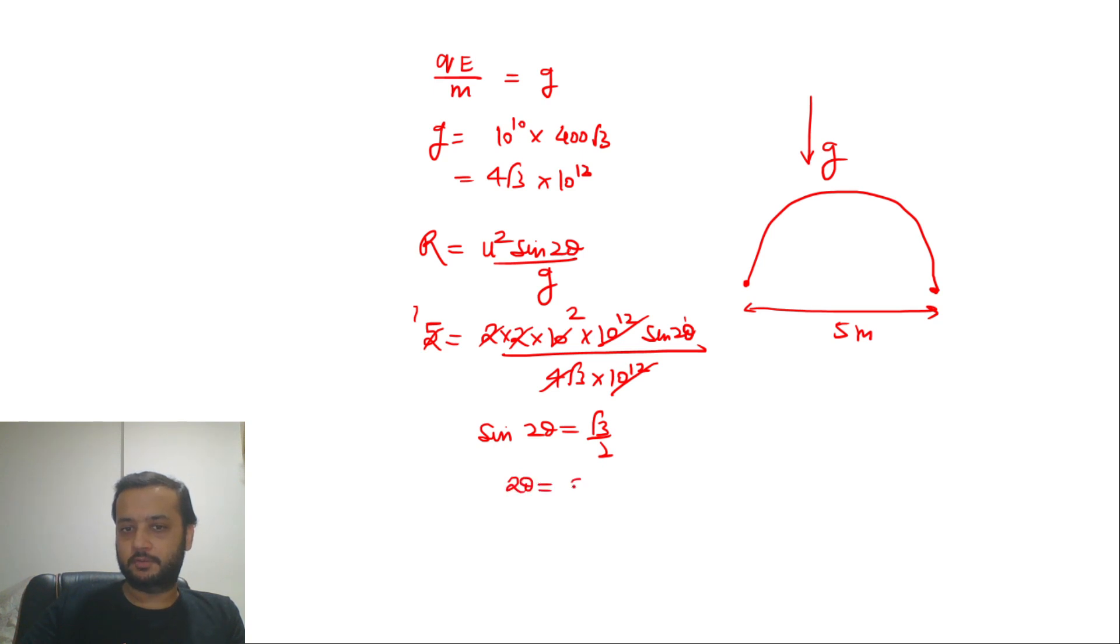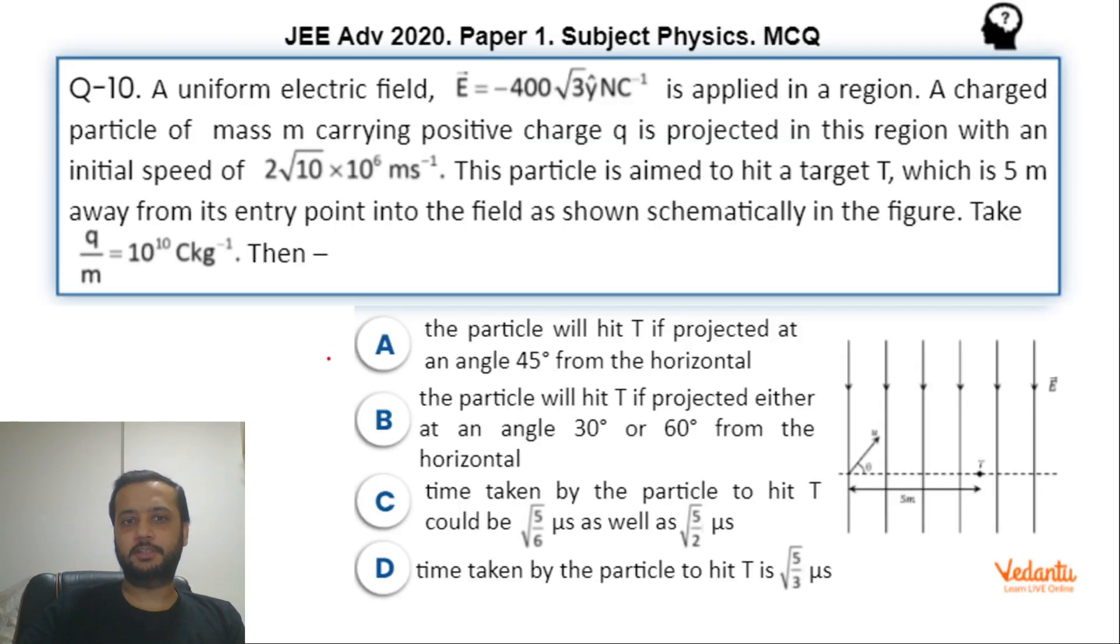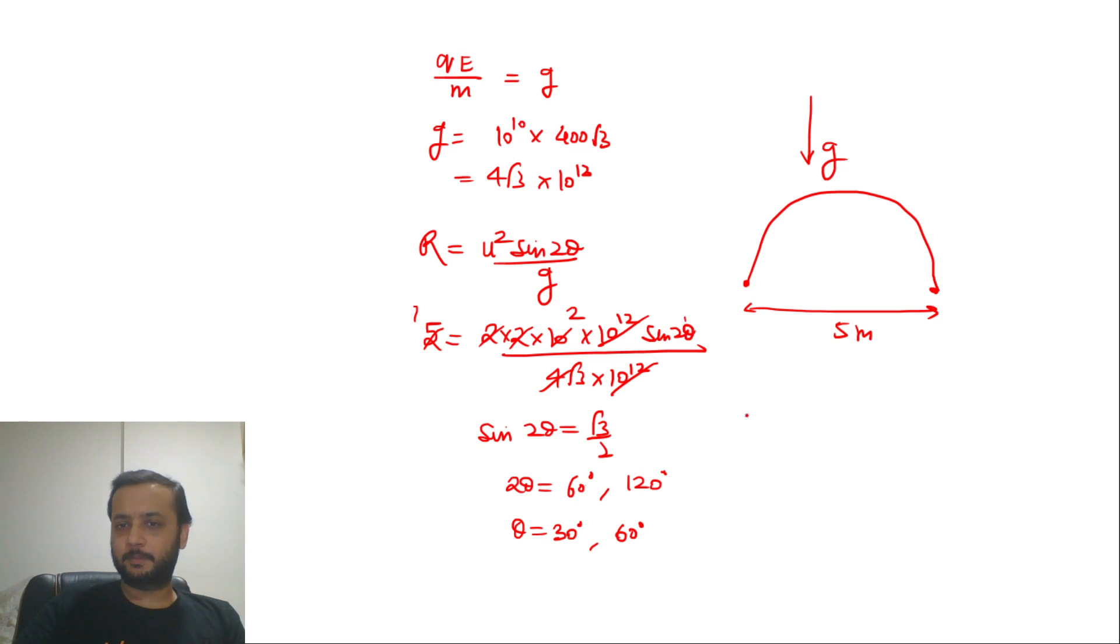So sin 2θ ki value aa rahi hai root 3 by 2, from which we can say that 2θ will be 60° and 120°, which makes θ = 30° and 60°. So we can say ki agar hum 30° pe launch karenge ya 60° pe launch karenge, this particle will reach, and hence option B is right which makes option A wrong.